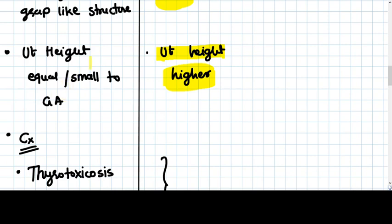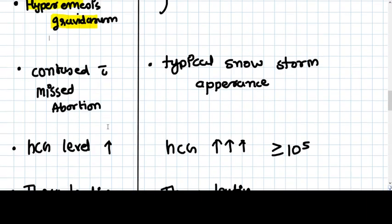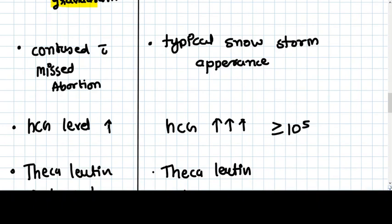The complications are the same but more prominent in complete mole, like thyrotoxicosis, preeclampsia, and hyperemesis gravidarum. On ultrasound, complete mole shows a typical snowstorm appearance. But in partial mole, no such amount of tumor tissue is seen, and sometimes we confuse it with missed abortion because some fetal parts are also seen.